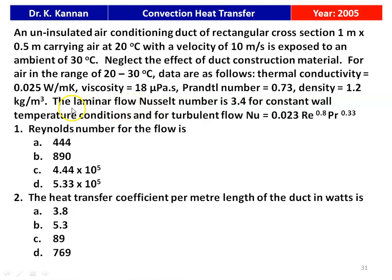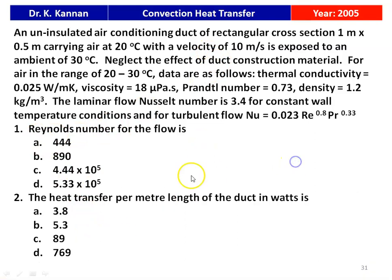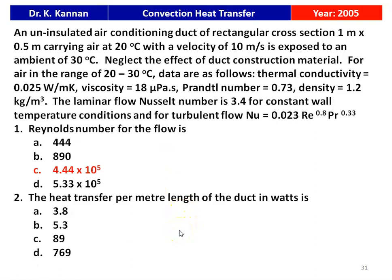The laminar flow Nusselt number is 3.4 for constant wall temperature condition, and for turbulent flow, Nusselt number equals 0.023 × Re^0.8 × Pr^0.33. For this problem there are two questions: first, calculate the Reynolds number for the flow; second, calculate the heat transfer per meter length of the duct. The answer for the first question is Re = 4.44 × 10^5, and for the second question, heat transfer per meter length is 769 watts.